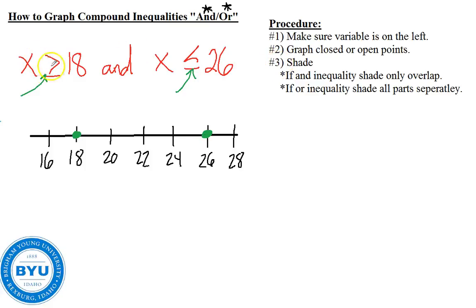We then are going to shade. Since this is X is greater than 18, I'm going to shade to the right. And since this is X is less than or equal to 26, I shade to the left. Now in an and inequality, we are going to shade wherever these overlap, as it says here in the third procedure. If it's an and inequality, we shade where they overlap. And the overlap is here in between these two points. That's how we do an and inequality.